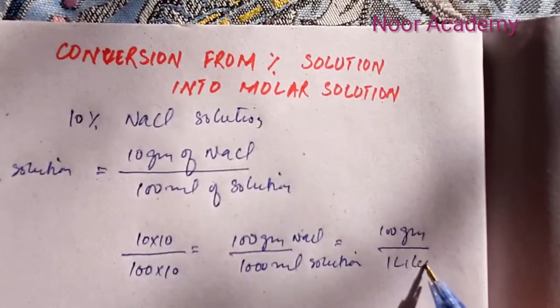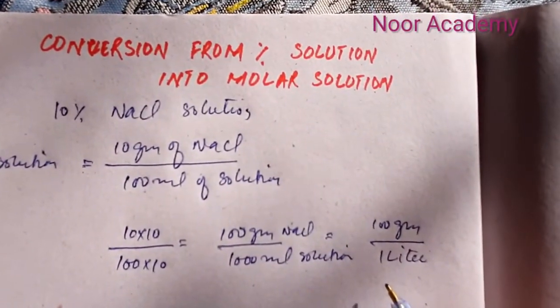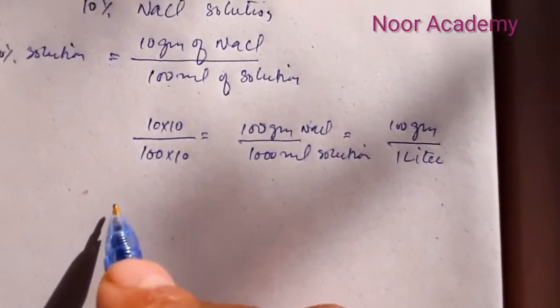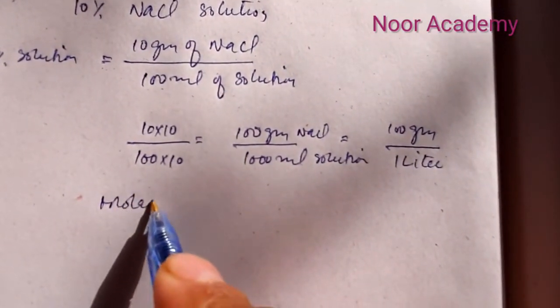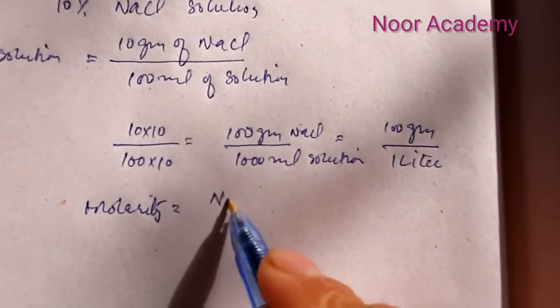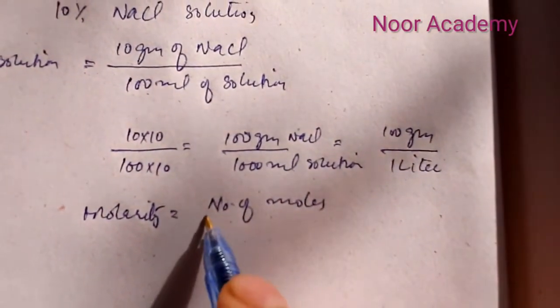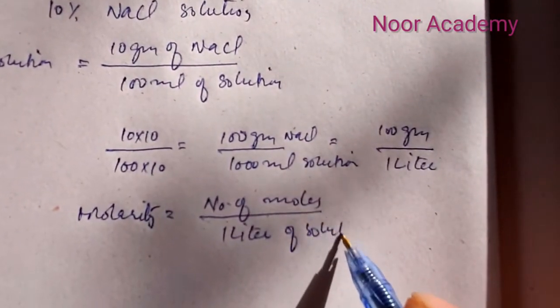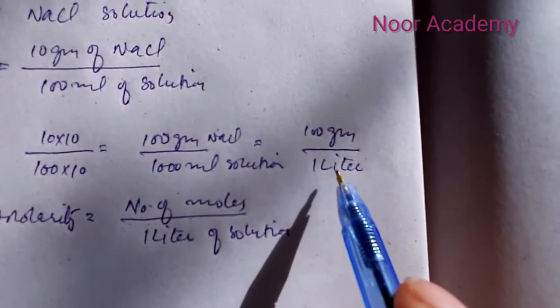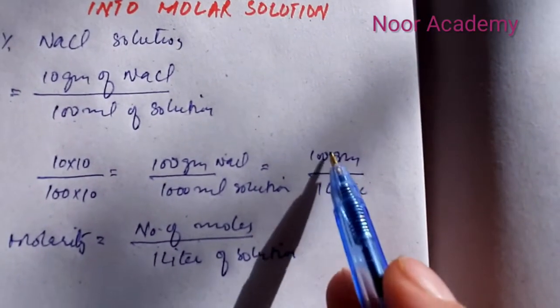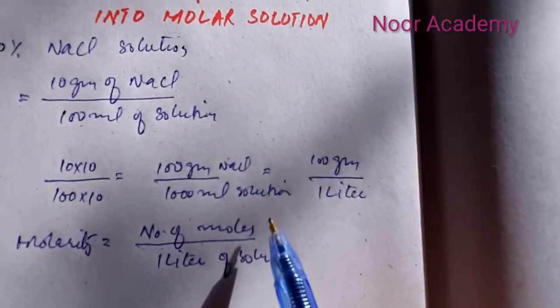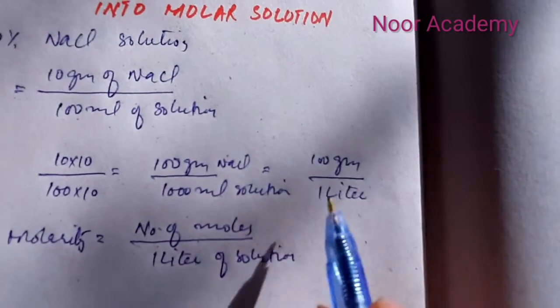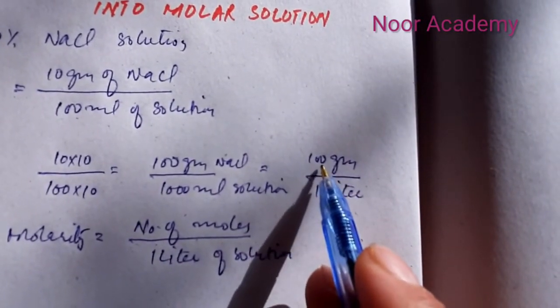Now we know that molarity can be expressed as molarity equals number of moles over one liter of solution. Now we have one liter but we have grams, so now we need to convert these 100 grams into number of moles.